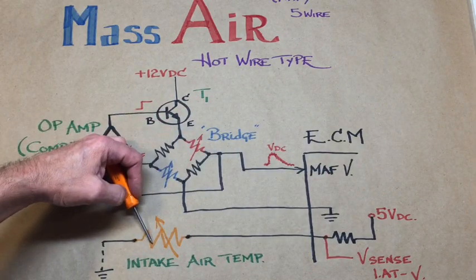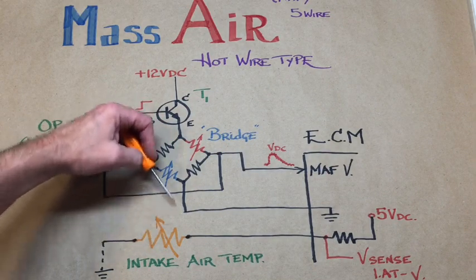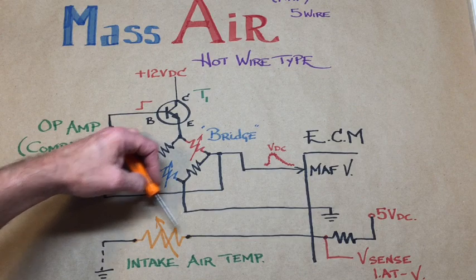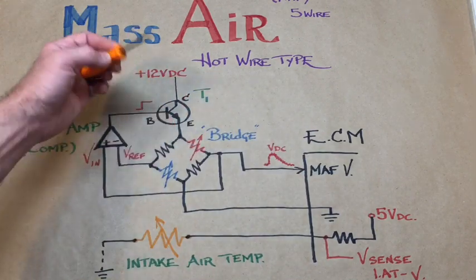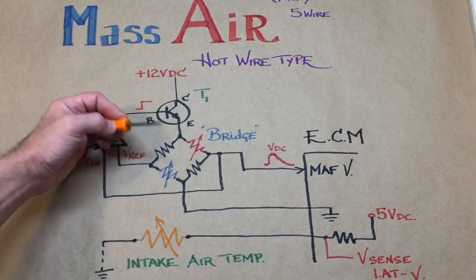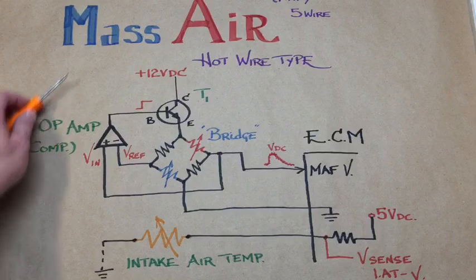As the intake air temperature changes up or down, the thermistor would react accordingly, changing the voltage that's sensed at this particular point inside the engine control module. Simple voltage divider network. Simple, straightforward.